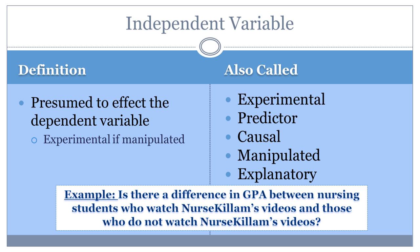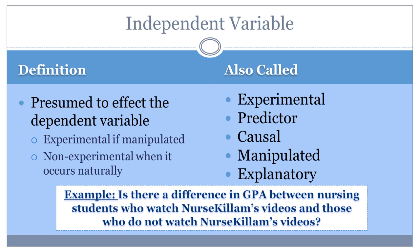This manipulation means that the researchers will cause the variable to happen in a particular group of people. For example, if we used our question for an experimental study, the researcher would show Nurse Killam's videos to one group of students, while ensuring that the other group of students did not see them. If the study is non-experimental, the variable is assumed to happen naturally before or during the study. Instead of making some students watch the videos, the researchers would measure or observe if the videos were watched. One way to do this would be to survey students to see if they had watched the videos.